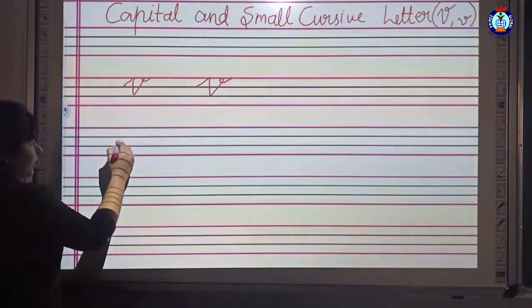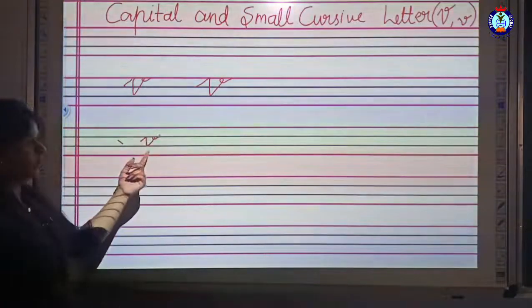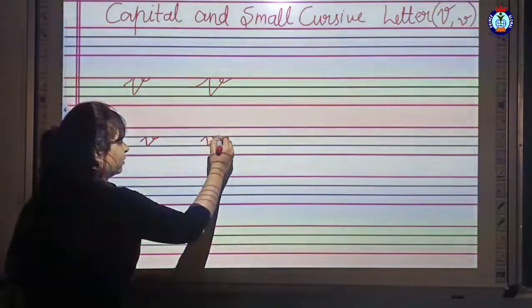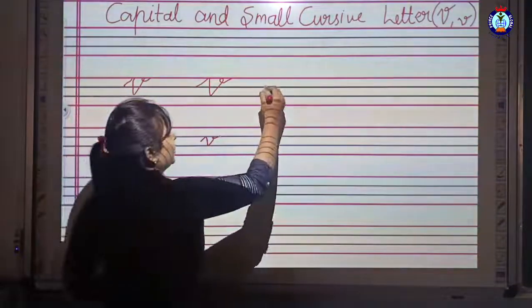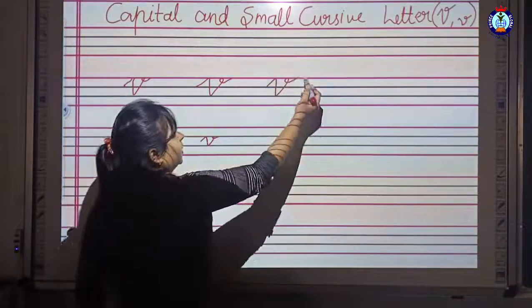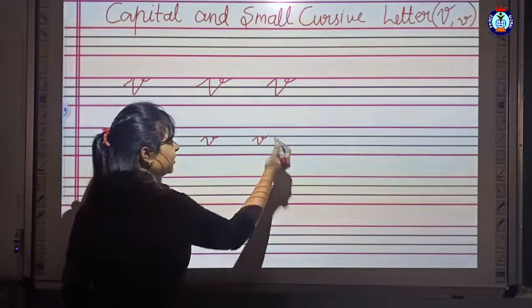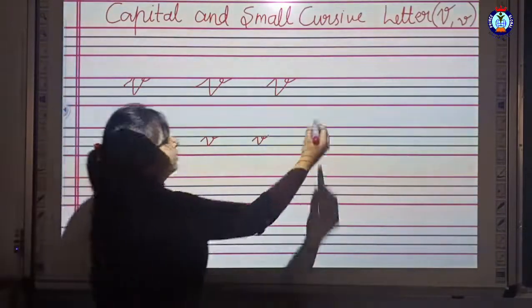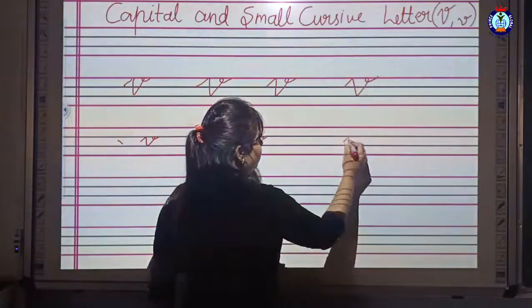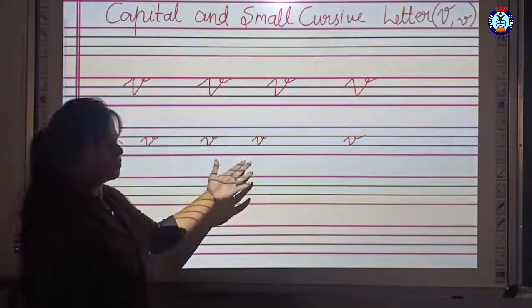This is small V. Capital V occupies three lines: one, two, three. Small V occupies two lines. Capital V and small V. I have shown you capital V and small V.